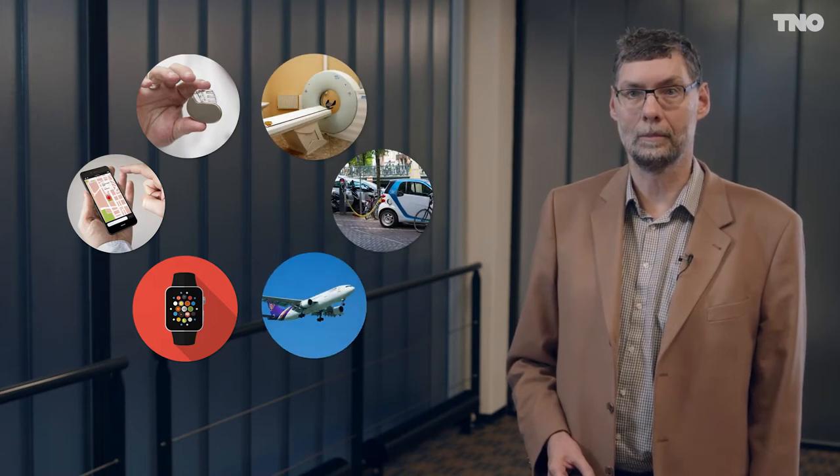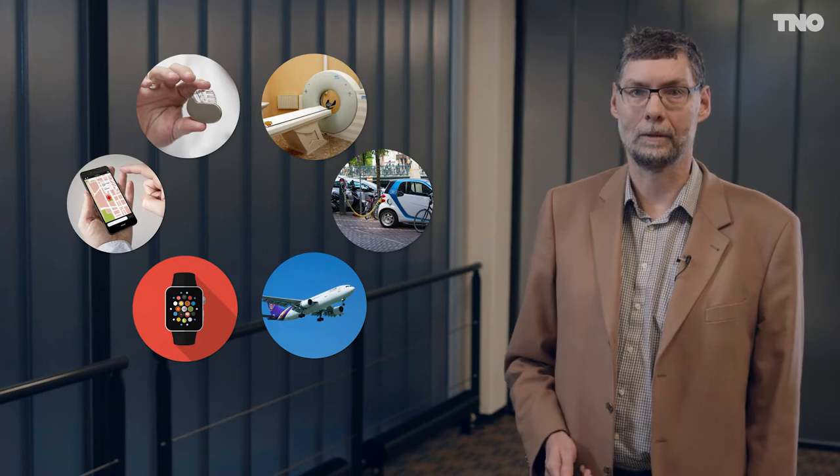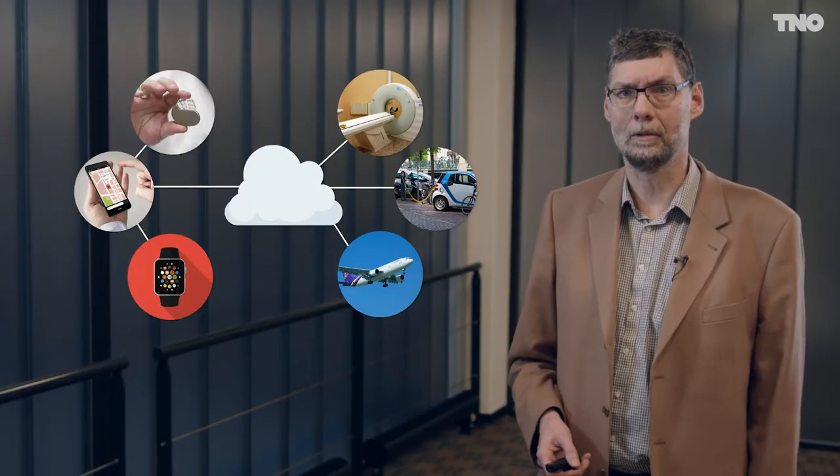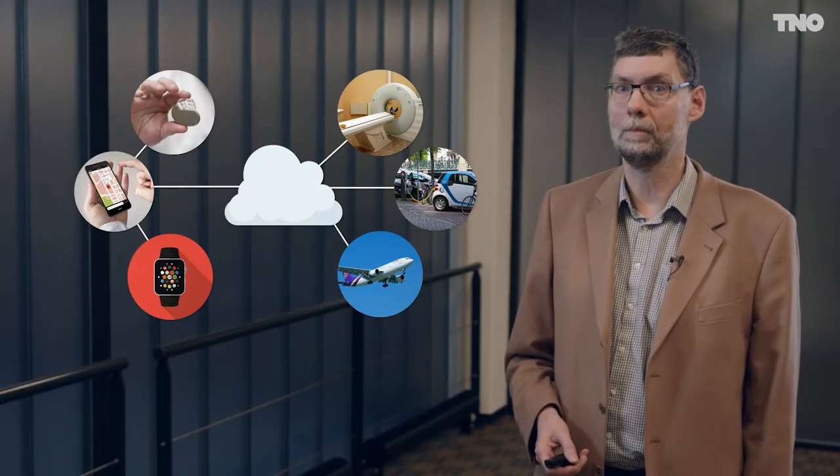For instance, we have resource-constrained systems like hearing aids or wearable devices, and we have large complicated systems like CAT scanners and airplanes. There is a fast evolution of the business. We see new business models, new partnerships, more functionality, and most of this is being made possible by integration and interoperability of systems. In fact, each system today is part of a system of systems.